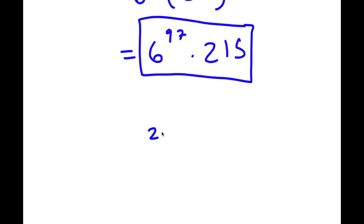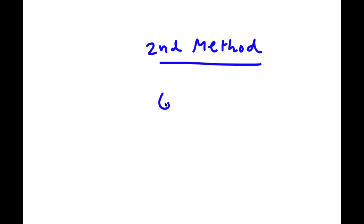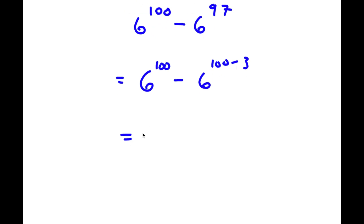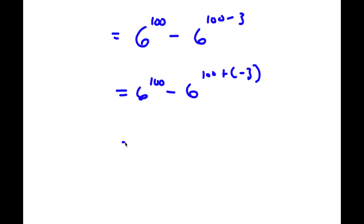I actually have a second method of solving this problem. I start with 6 to the power of 100 minus 6 to the power of 97. This time, instead of rewriting 100 as 97 plus 3, I'm going to rewrite 97 as 100 minus 3, which is 100 plus negative 3. So 6 to the power of 97 becomes 6 to the power of 100 times 6 to the power of negative 3.